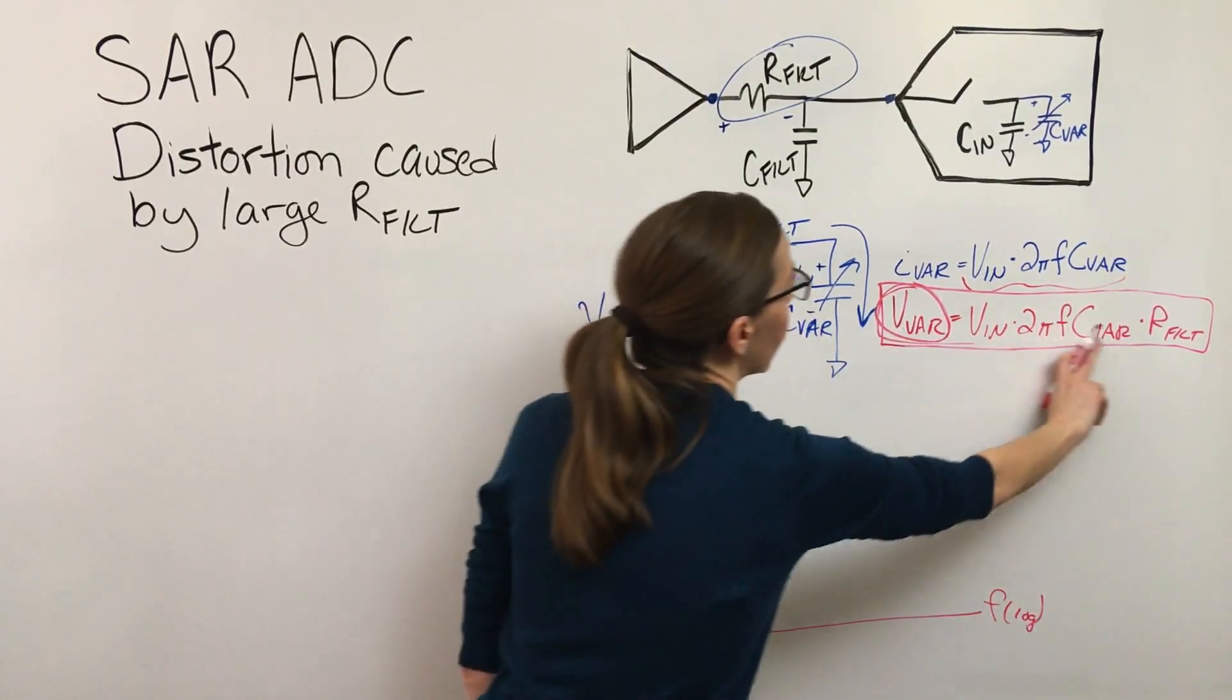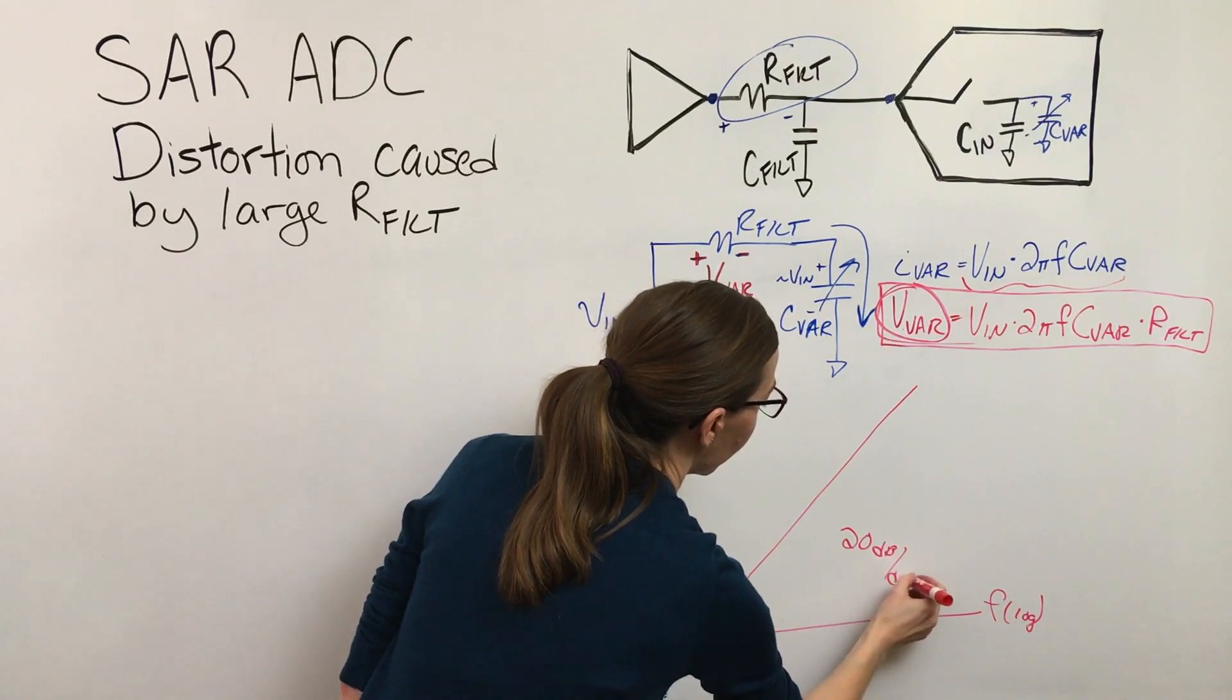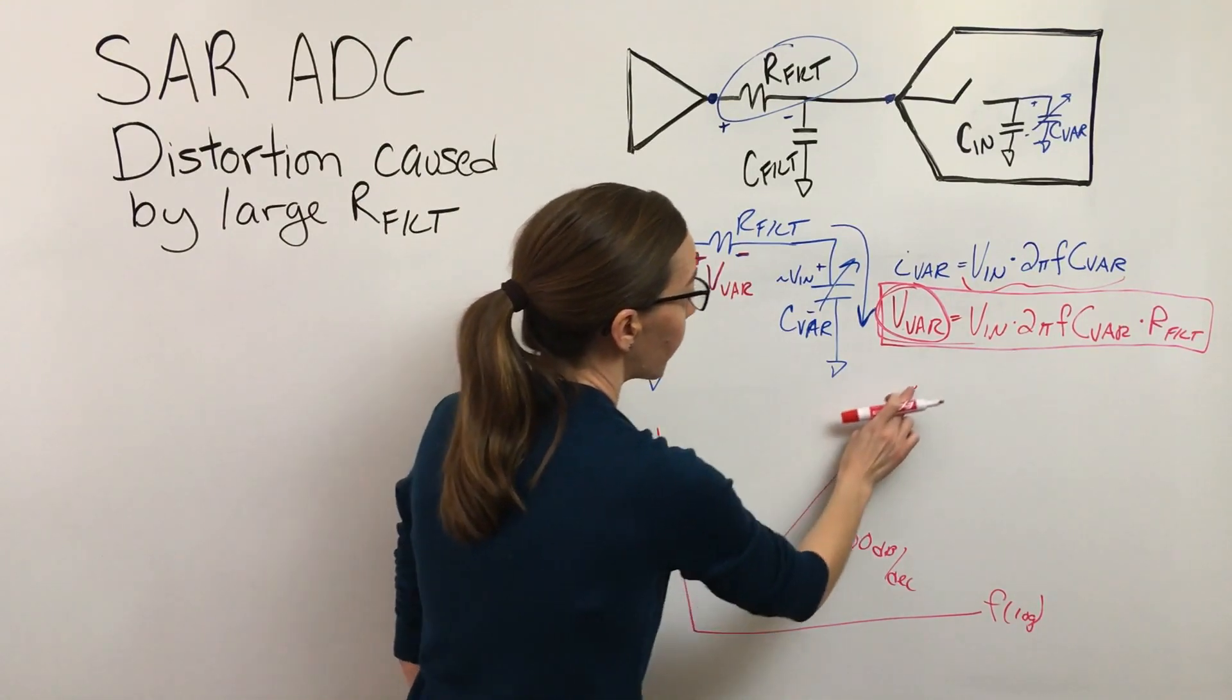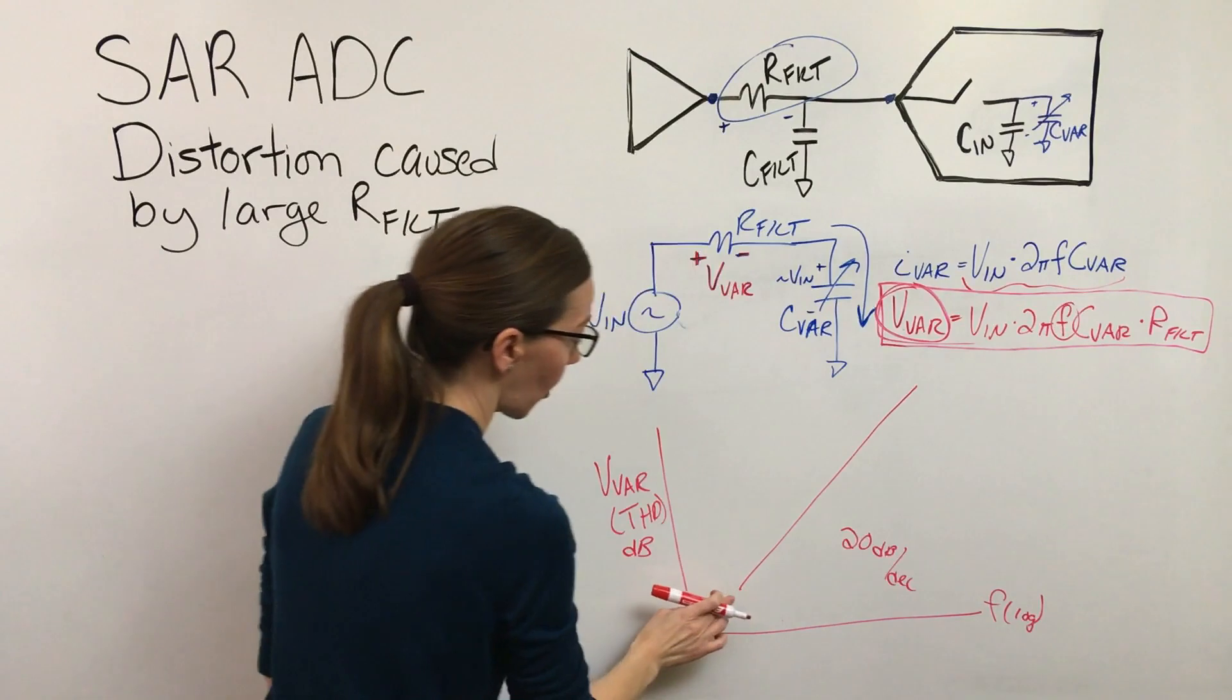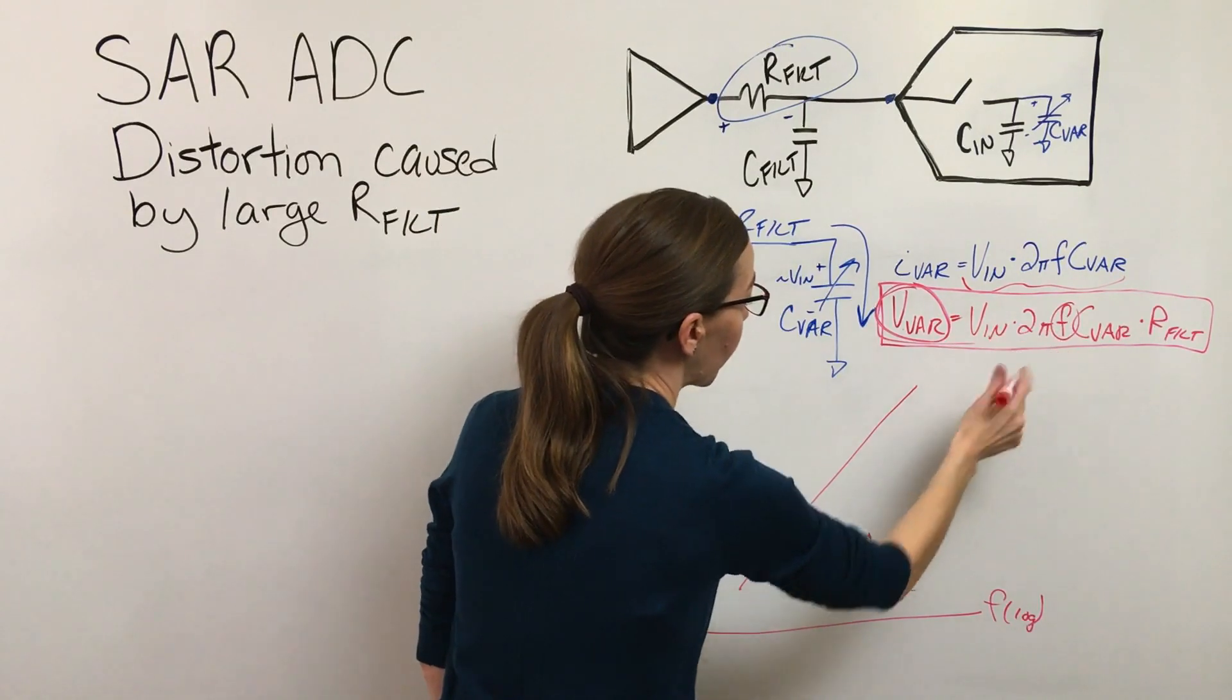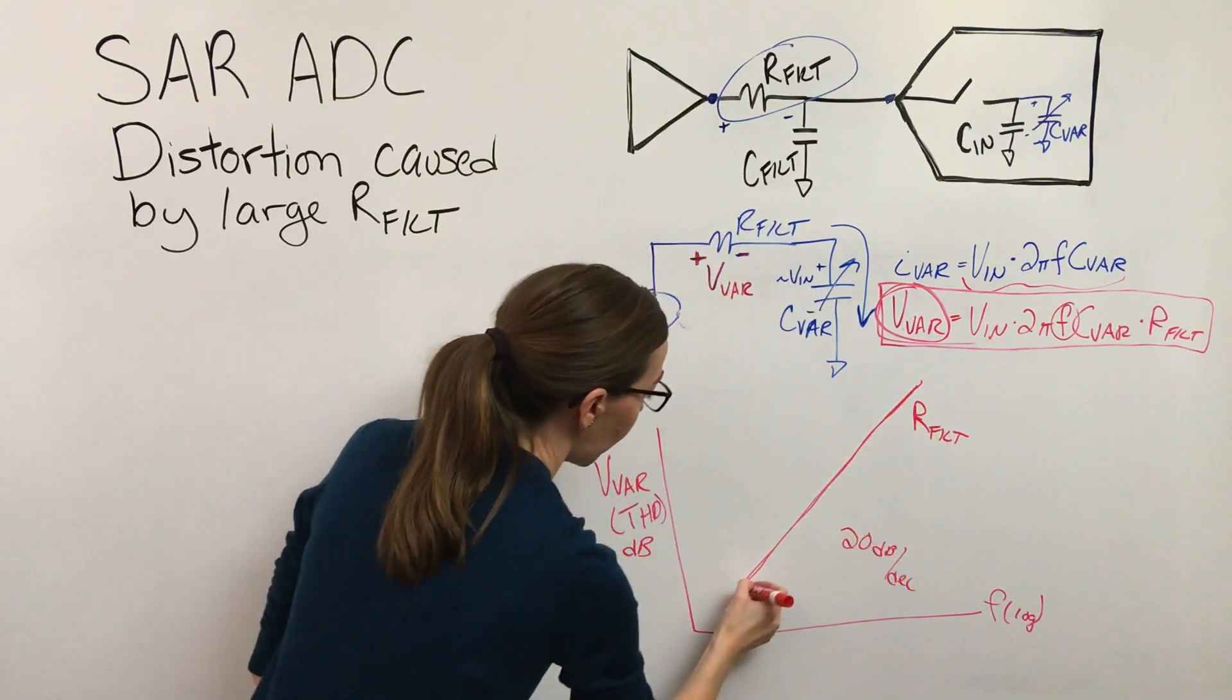We can see that this equation is just going to be a 20 dB per decade line. This distortion is going to get worse as frequency goes up—we can see that here. As our frequency gets higher this is going to get worse, and as our resistor gets bigger that's going to get worse.